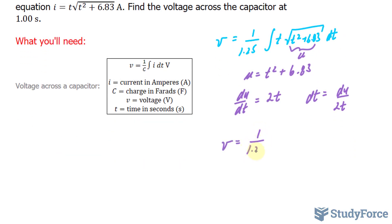1 over 1.25 times the integral of t, the square root of u, this dt has become du over 2t. This t and this t will cancel out, leaving you with half du.